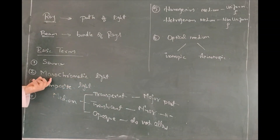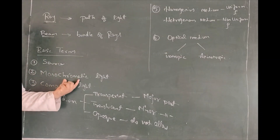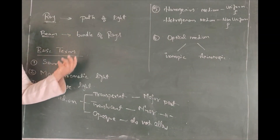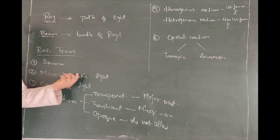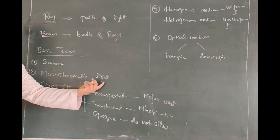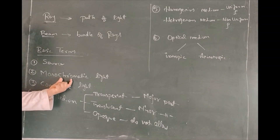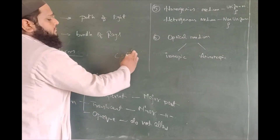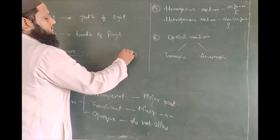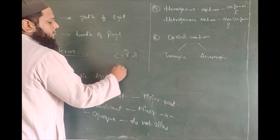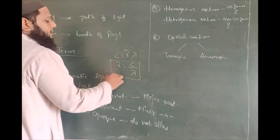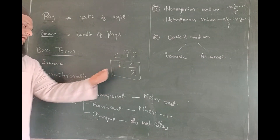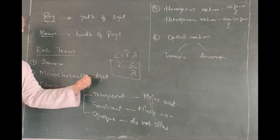Coming to monochromatic light — what do you mean by monochromatic light? Mono means one or single; chromatic comes from the word chroma, which means colour. So single colour. In optics, colour refers to wavelength, so this means single wavelength. Monochromatic light means light which has a single wavelength. We know that C = νλ, so if wavelength is single I can also call the frequency single. So monochromatic light is light of a single wavelength or a single frequency.